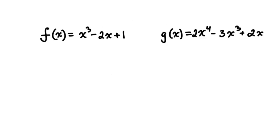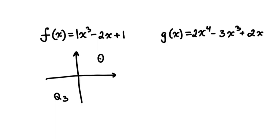Consider the following two functions. The first function, f of x, is a cubic polynomial function of the third degree. When the leading coefficient of an odd degree function is positive, the function follows the end behavior of the linear function. So it goes from quadrant 3 to quadrant 1, just like a linear function with a positive slope. This cubic function will start in quadrant 3 and end in quadrant 1.